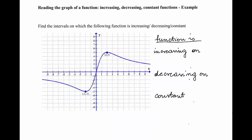In this example, we are to find the intervals on which the function given by the graph is increasing, decreasing, or constant. Let's recall that the function is increasing on the interval when the graph of the function is rising. The function is decreasing when the graph is falling, and the function is constant when the graph is a horizontal line.